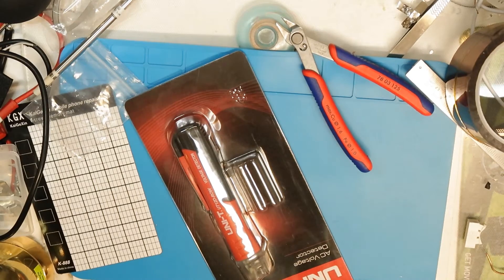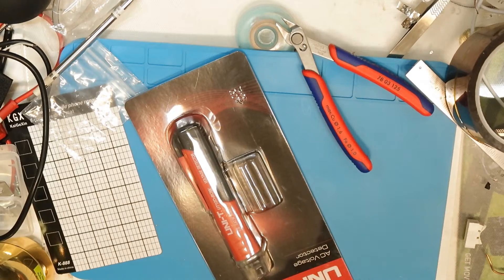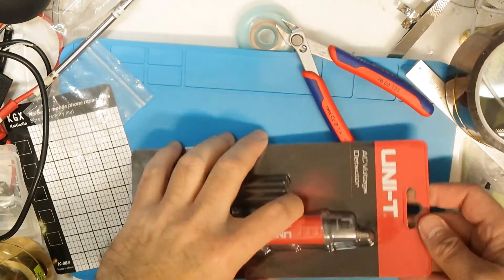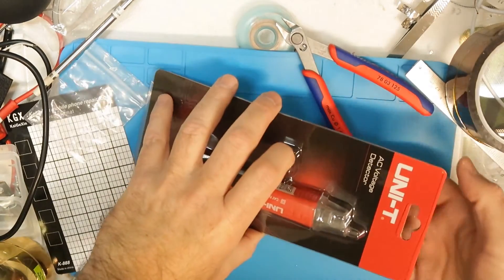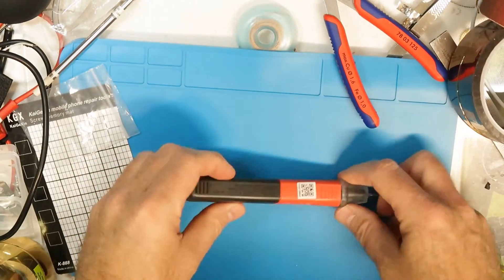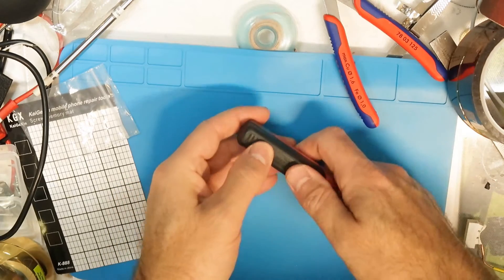Hi all, when buying something else I got this AC voltage detector from Unity. I like the brand, they usually have very good stuff and much cheaper than Fluke for example, and I think the quality is about the same, at least from all the things that I have tested.